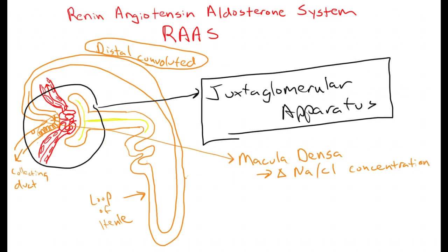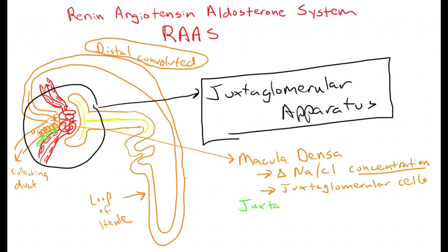These macula densa cells are sensitive to changes in sodium and chloride concentration. In response to changes in this concentration, the macula densa communicates with juxtaglomerular cells. Juxtaglomerular cells are cells surrounding the afferent arteriole, and interestingly, they are actually specially adapted smooth muscle cells. Just like other smooth muscle cells of the arteriole, they lie just outside the basement membrane of the arteriole.